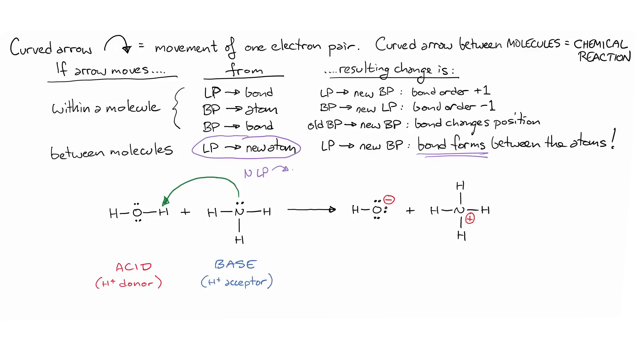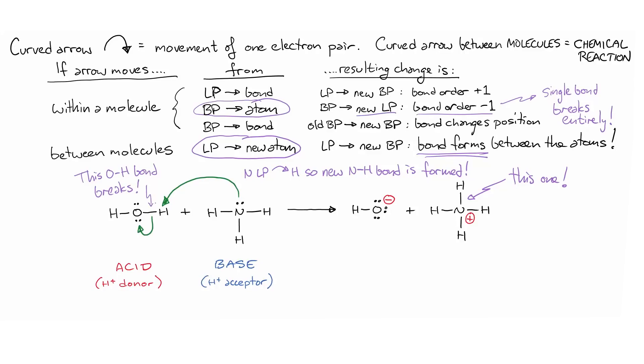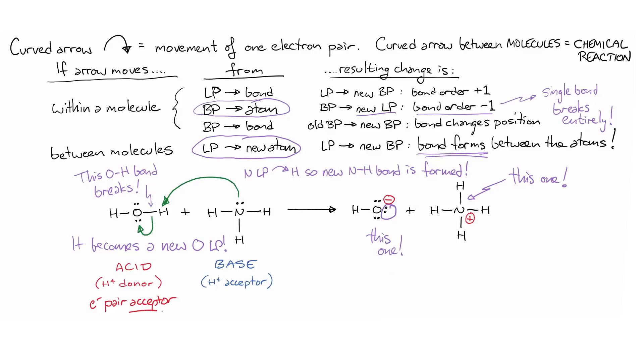But to complete the transfer, we also need to break the OH bond in water. So we need a second arrow, which starts at that bond and ends on the neighboring oxygen atom. That electron pair now becomes a third lone pair on the oxygen in the products. All acid-base reactions involve the formation of a new bond and breaking an old one. The first arrow starts at a lone pair on the base and is directed toward the hydrogen atom, forming the new bond. Then a second arrow breaks a bond in the acid.